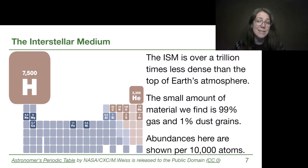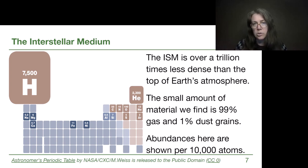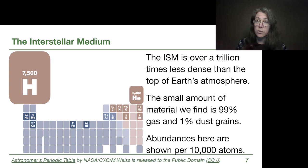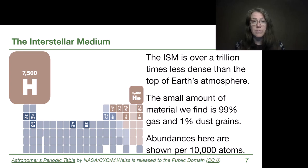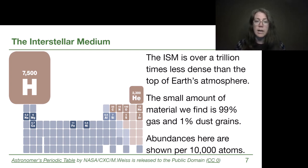The ISM is over a trillion times less dense than the top of Earth's atmosphere. Nearly all of what is out there is gas — simple atoms or molecules — with hydrogen and helium being the most common. Per 10,000 atoms, hydrogen is found in considerable amounts by itself and as H2 molecules, and is also part of many organic molecules in space. There is also about 1% dust grains, which are solid pieces of material. Overall, there is just not a lot of variety in elements or stuff out there.